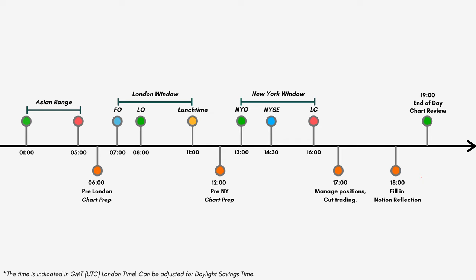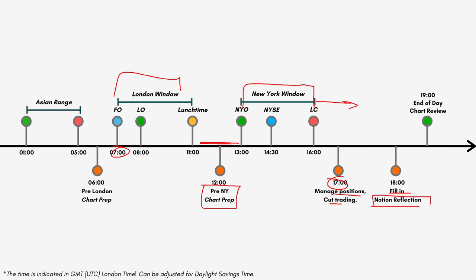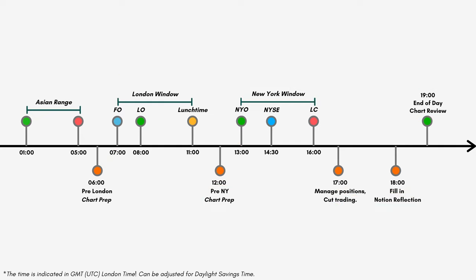I'm going to share a trading session overview document in the description — download it. It shows sessions in GMT time. This is your Asian range — check out my Asian range video. We have pre-London chart prep, the London window for trading, then pre-New York chart prep. New York opens all the way through to London close is when you can definitely trade. After that, cut your trading day — you don't want to end up working seven to five or more. Cut trading, manage positions, and fill in your Notion reflections. Make sure to do an end-of-day review — go over your charts and journal them.